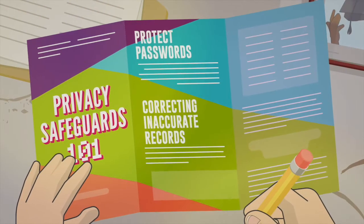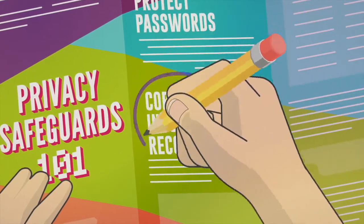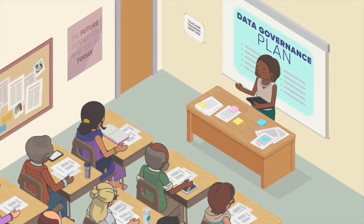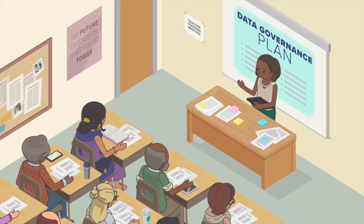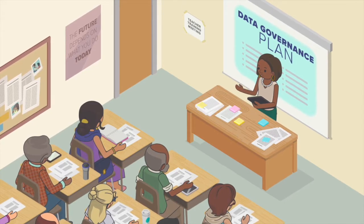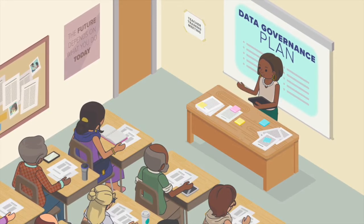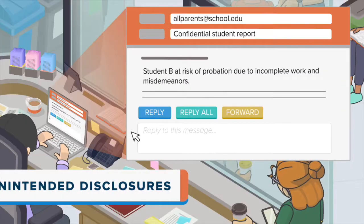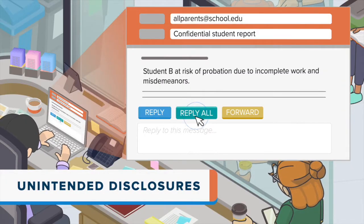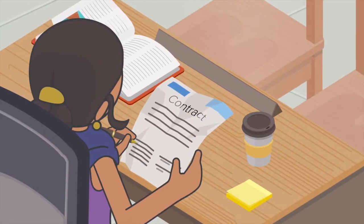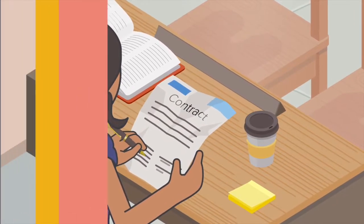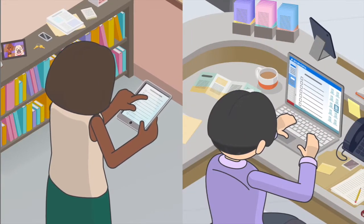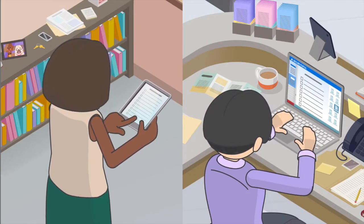Creating basic privacy safeguards in your school might be easier than it seems — there's a lot of low-hanging fruit. You can implement a data governance plan, train staff on the latest privacy issues and practices, such as how to handle suspicious-looking emails or avoid unintended disclosures, and include privacy provisions in your contracts.